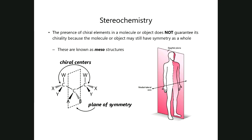A structure can have multiple chirality centers, and this is the key: if the structure has only one chirality center, the structure as a whole must be asymmetric and must have an enantiomer. But when there are several chirality centers, we call each of those a chiral element. When a structure has several chiral elements, the structure can end up being symmetric as a whole. The moment it is symmetric as a whole, the structure is rendered achiral — it and its mirror image will be one and the same. They are superimposable and perfectly identical, despite the structure having chirality centers.